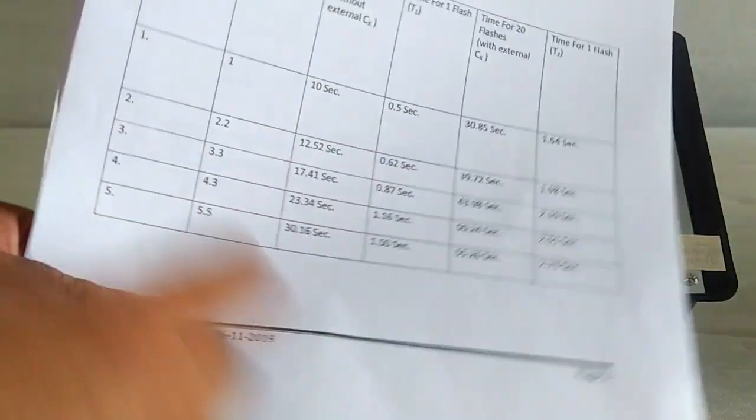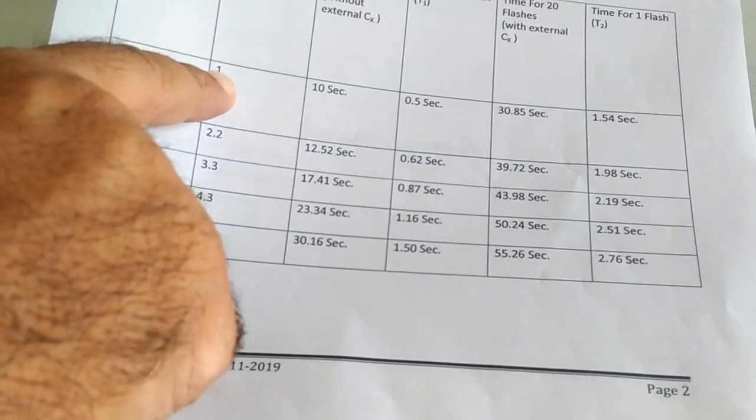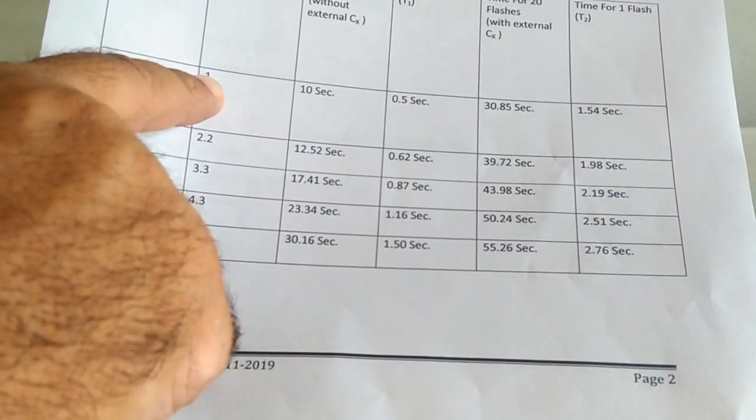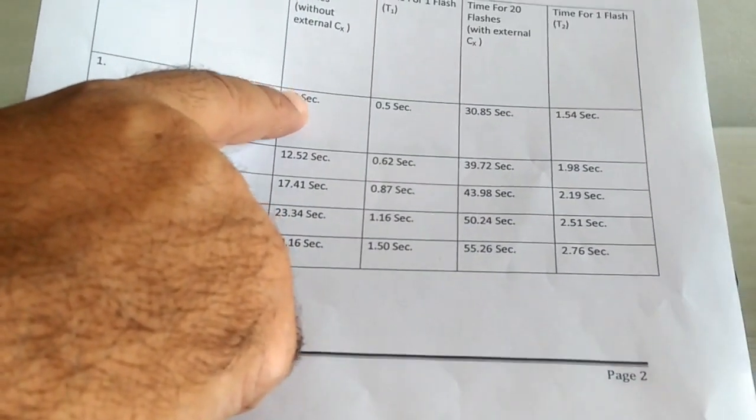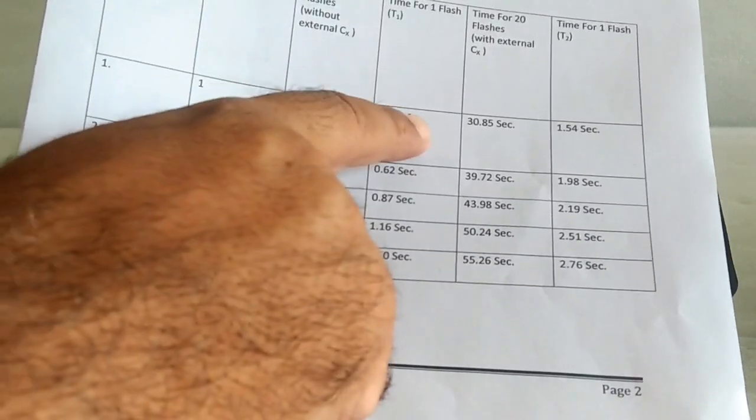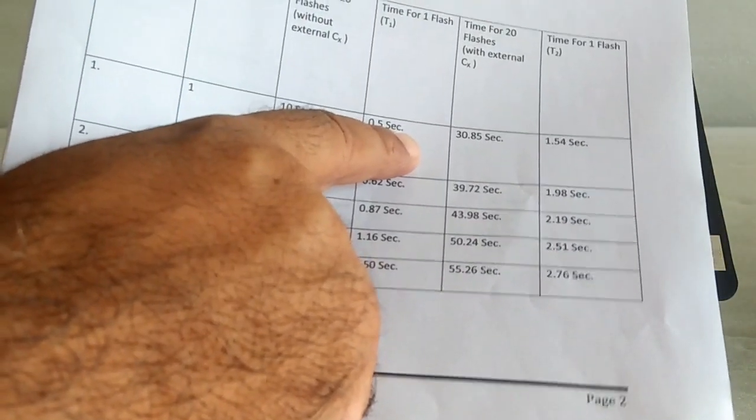Here we have the sample of the evaluation table. When 1 microfarad is used, record the time for 20 flashes without external capacitance, then find out the time for 1 flash.